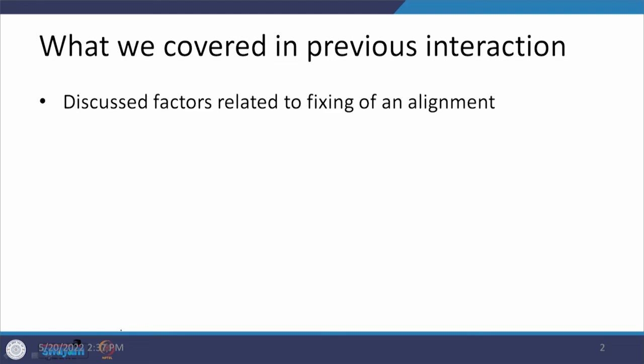Dear students, we are back to the class of Geometric Design. We have been discussing module 3, which is related to the design of alignment. In the previous interaction we had a discussion on the factors which a traffic engineer or planner should take into consideration while fixing any alignment. We talked about that alignment should be easy.